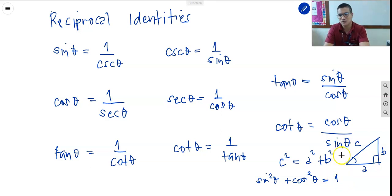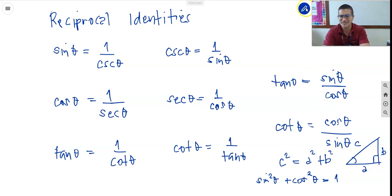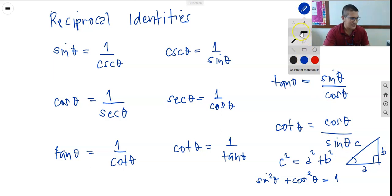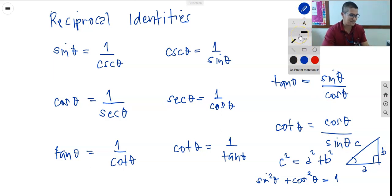These are the important identities that we need to remember and memorize so that we can solve and prove trigonometric identities. Let's try some examples with problems related to trigonometric identities.